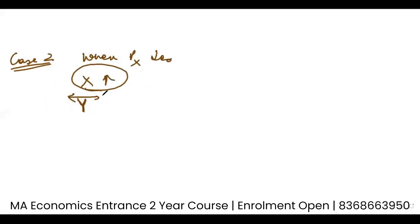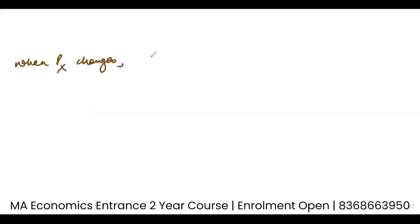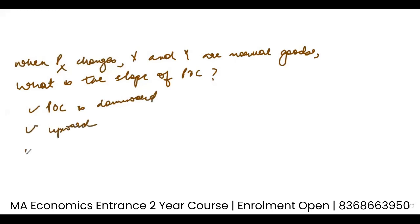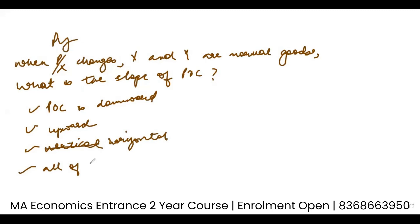This is very important from an exam point of view. They are going to ask a question like: assuming X and Y are normal goods, what is the slope of the POC? Options will be: POC is downward sloping, upward sloping, vertical or horizontal, and all of the above. Because all three cases are valid, the answer is all of the above.